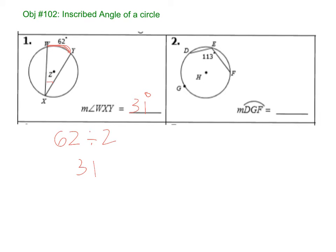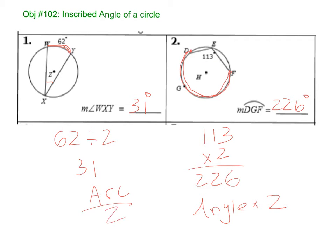Alright, now the opposite. Angle DEF is 113. So what are we going to do? Are we going to divide by 2 or multiply by 2? Multiply by 2. So 113 times 2. So 6, 2, 2, 226. DGF. So remember, angle times 2 or arc divided by 2. Either one. Just think about going back and forth.